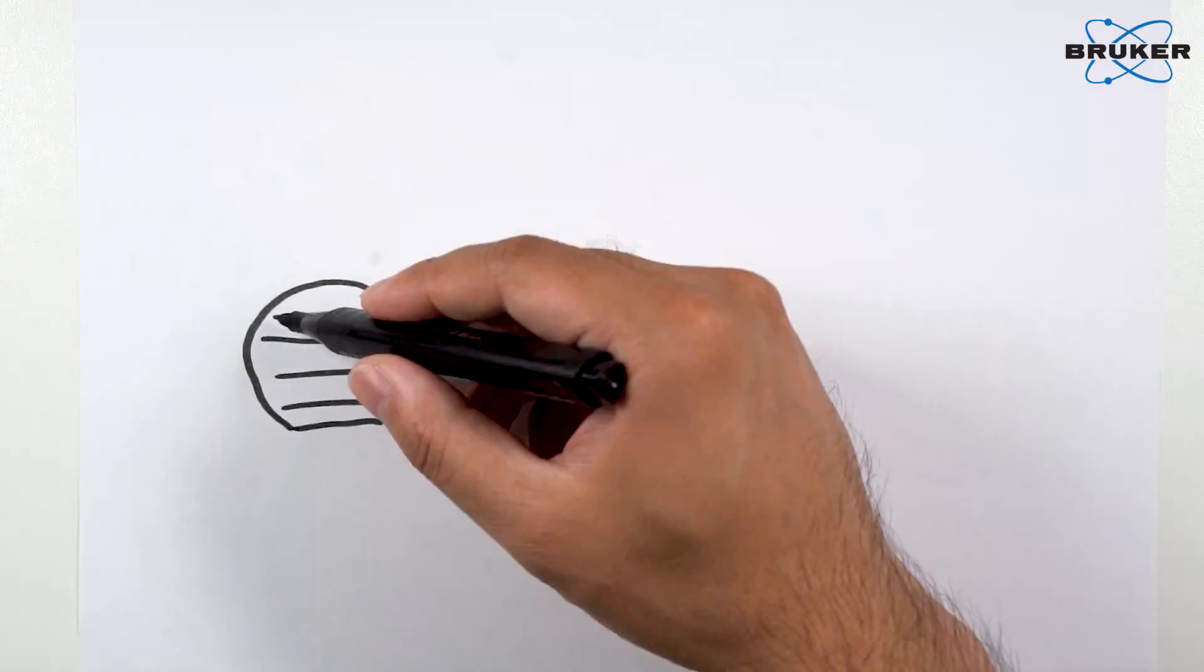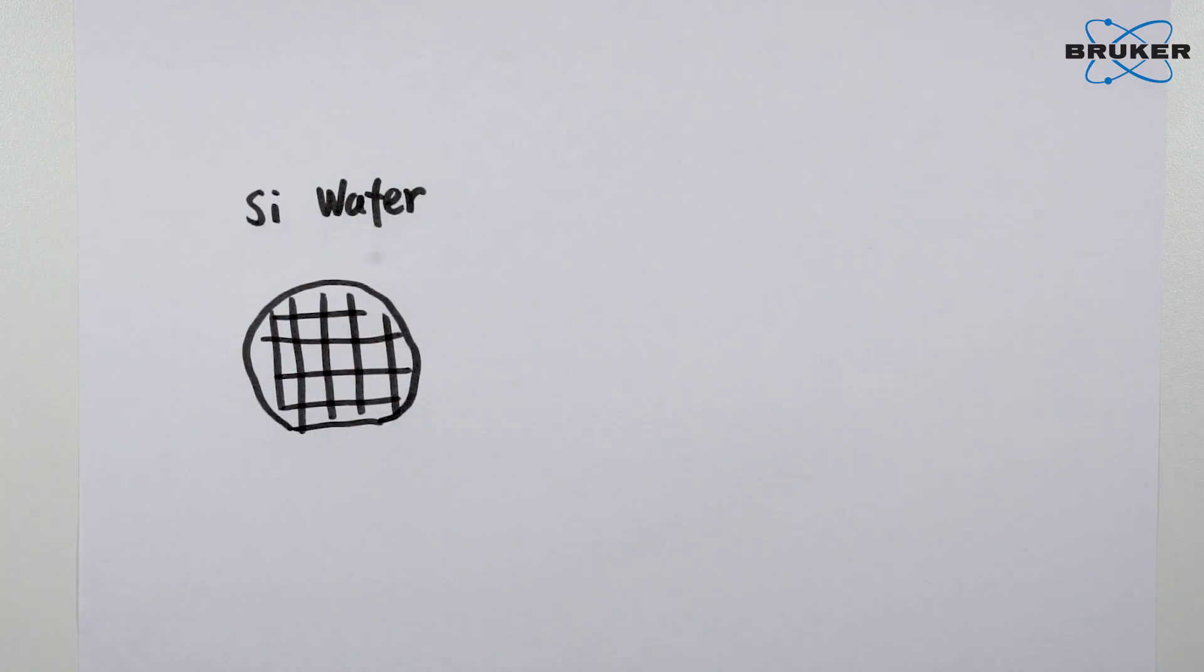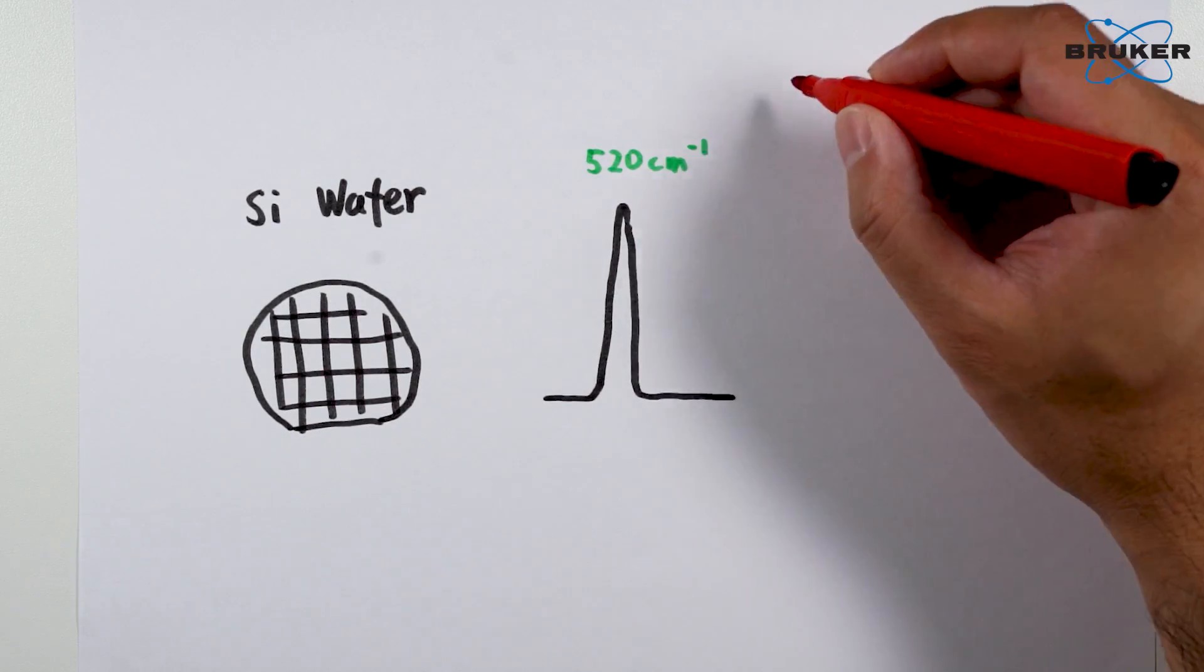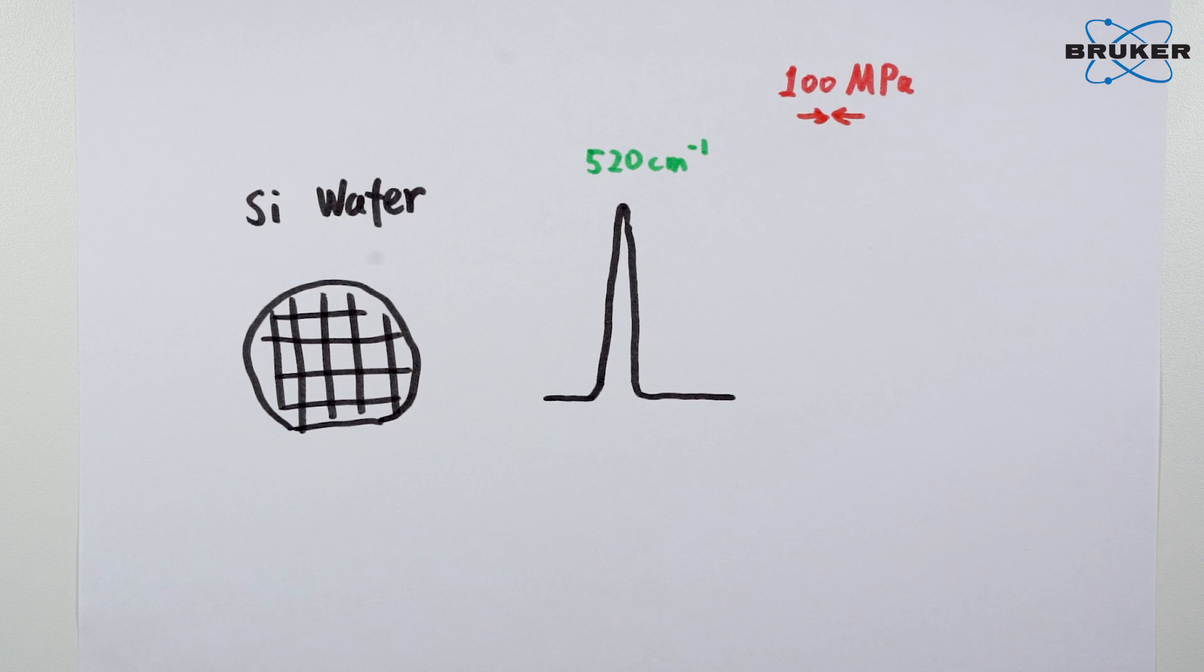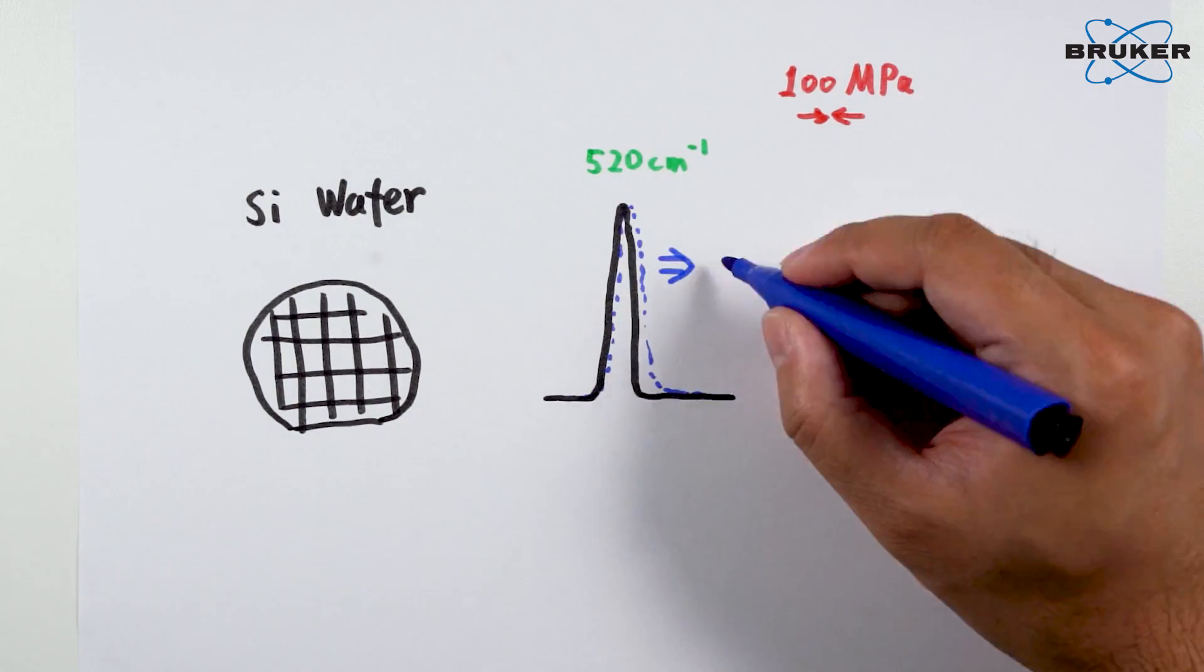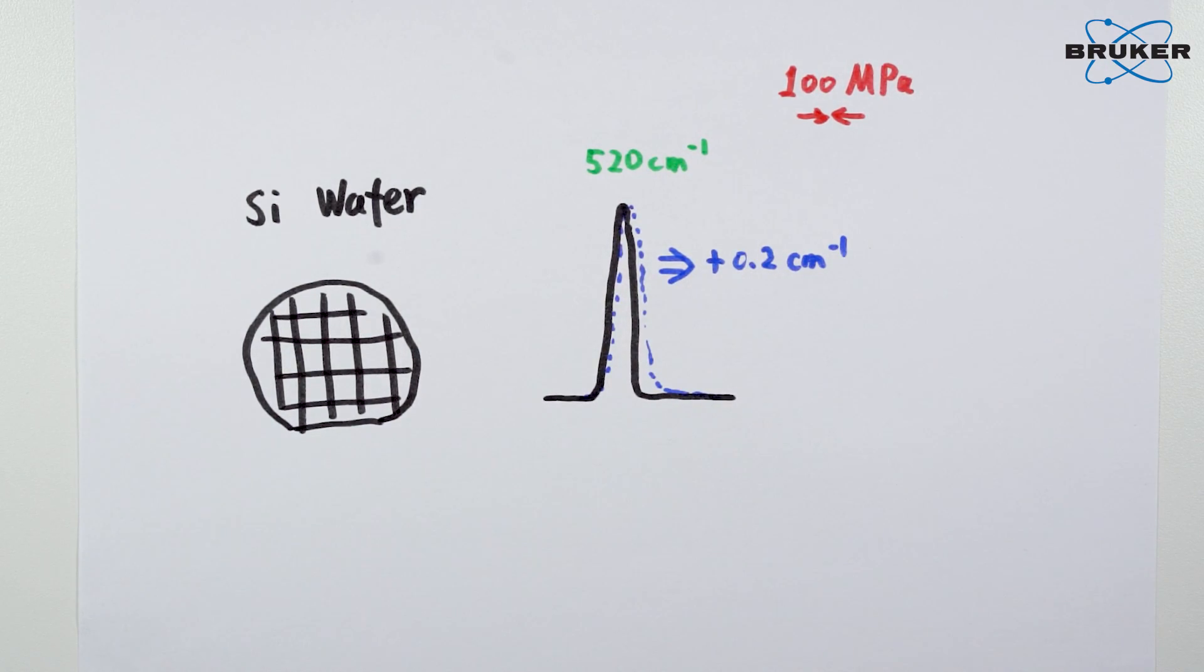Some experiments fundamentally rely on good calibrations. Take the monitoring of the stress in silicon wafer for example. 100 MPa stress only causes a 0.2 wavenumber shift of the Raman peak. A 1 wavenumber error in this case would lead to a 500 MPa error in the measurement.